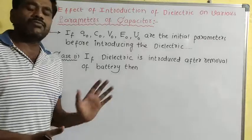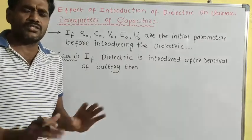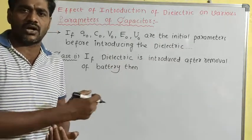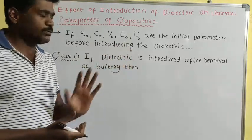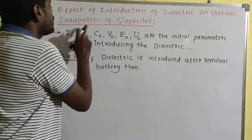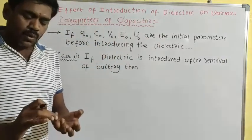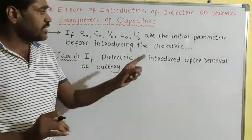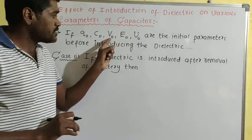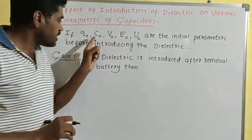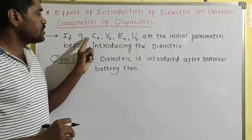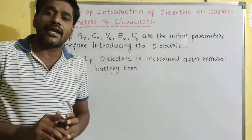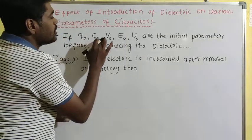This is an important conceptual question — there is no numerical or mathematical solving, simply a conceptual one. The topic is the effect of introduction of a dielectric on various parameters of the capacitor. These parameters are: energy, electric field, potential difference, capacitance, and charge. These five — charge, capacitance, voltage, electric field, and energy — are called parameters. The initial parameters before introducing the dielectric are Q₀, C₀, V₀, E₀, and U₀.